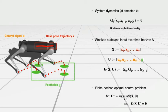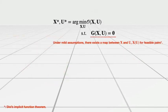Then finite horizon optimal control problem can be formulated as a constrained optimization problem.